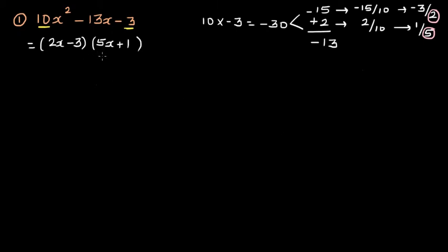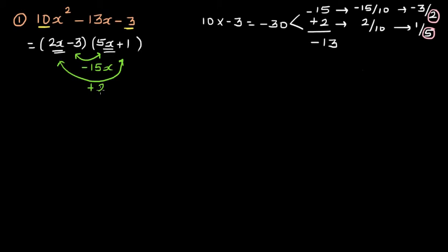The next step, which is equally important, is to always expand and check you get back the original expression. You can see clearly that 2x times 5x is 10x squared, and negative 3 times 1 is negative 3. The main thing is to check the middle term: multiplying gives minus 15x, and multiplying the other pair gives plus 2x, so minus 15x plus 2x is minus 13x. Our answer is right.